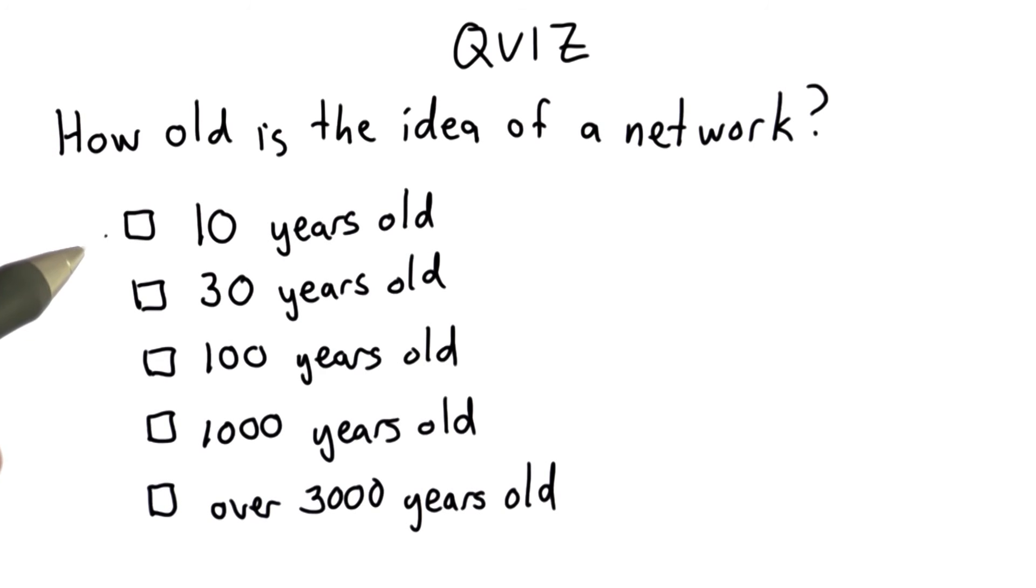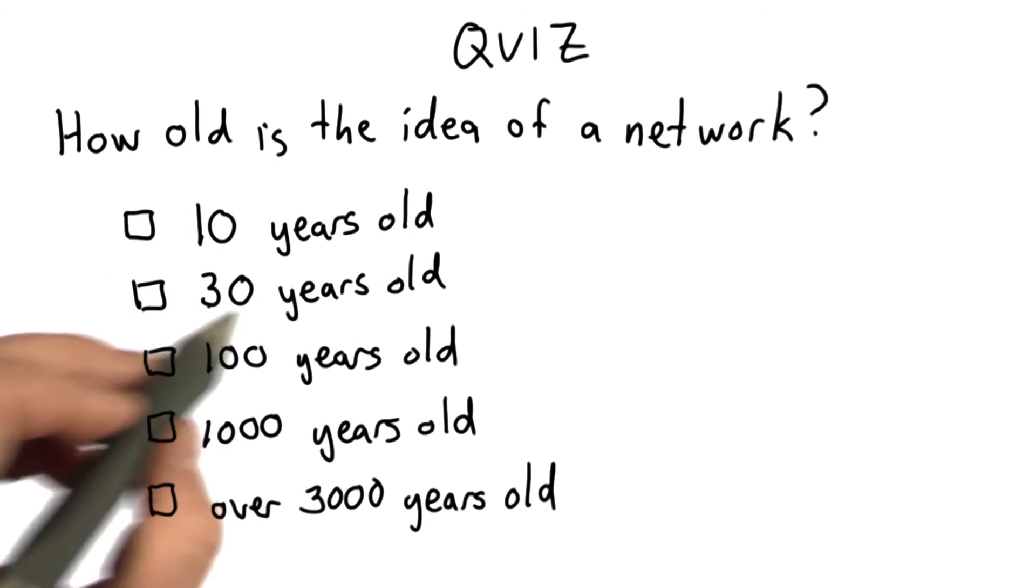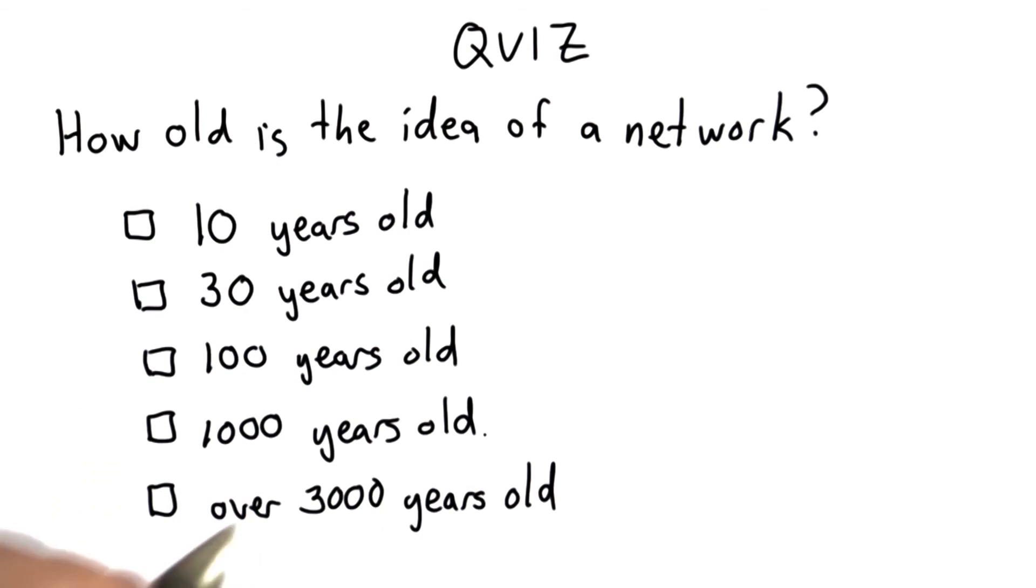So to see that you understand that definition of a network, and maybe also know a little bit about world history, we're going to have a quiz. So here are the possible answers. 10 years old, 30 years old, 100 years old, 1,000 years old, or over 3,000 years old.